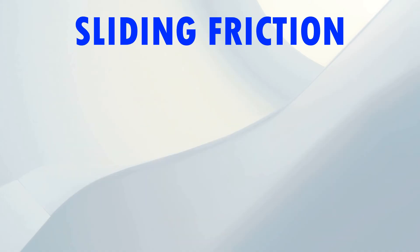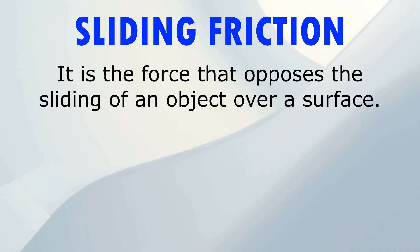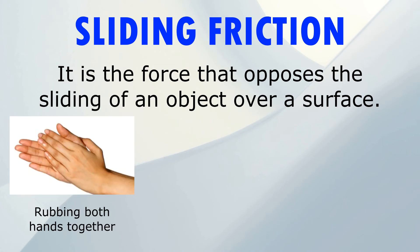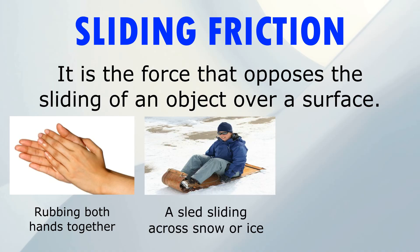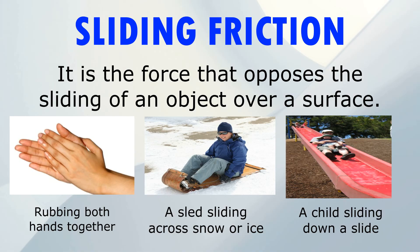Sliding Friction is the force that opposes the sliding of an object over a surface. Examples include rubbing both hands together, a sled sliding across snow or ice, and a child sliding down a slide.